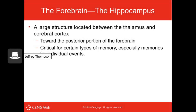The hippocampus is a structure located between the thalamus and cerebral cortex. It is the memory center of the brain — the formation of new memories, especially memories for individual events, starts here.